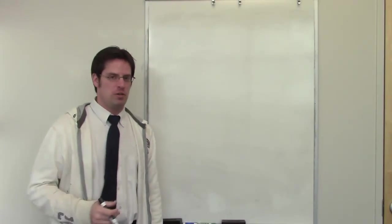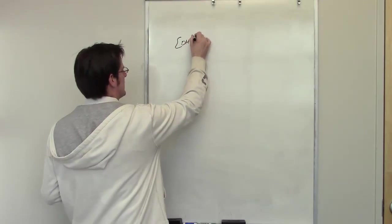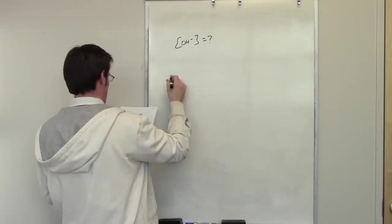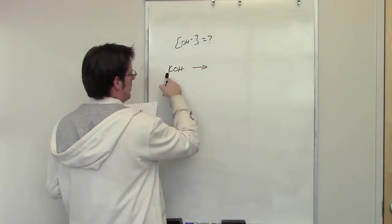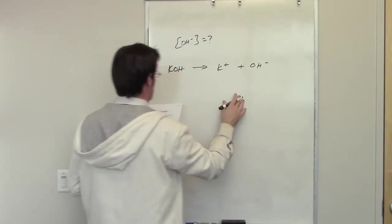This is a tricky and yet fun one. It asks us to calculate the final concentration of hydroxide, so I'll write that down here, that's formed when we add 5 mil, well yeah, when we've got KOH. KOH of course is going to dissociate to form potassium and hydroxide ions like that.